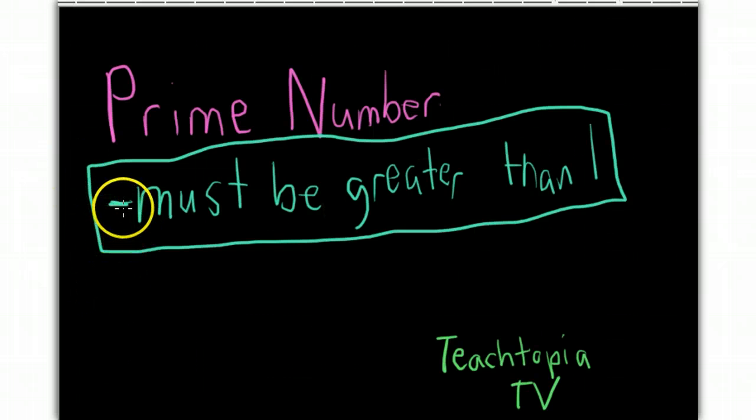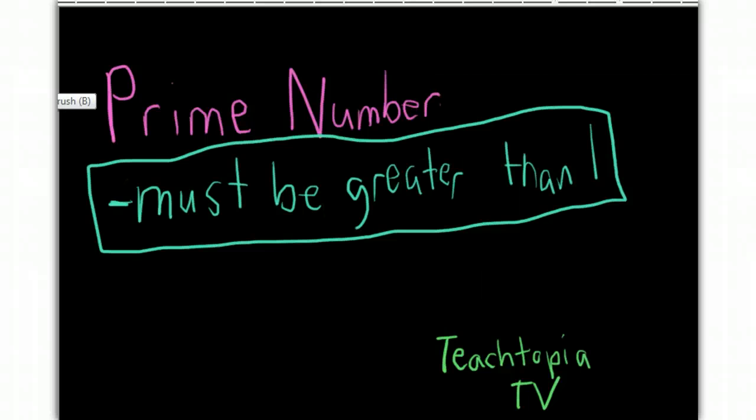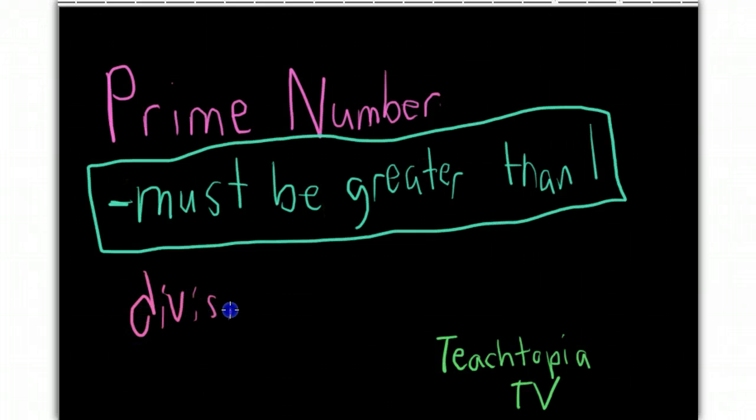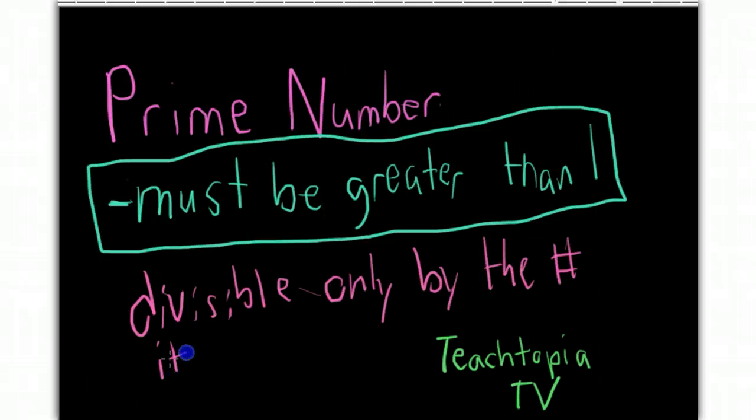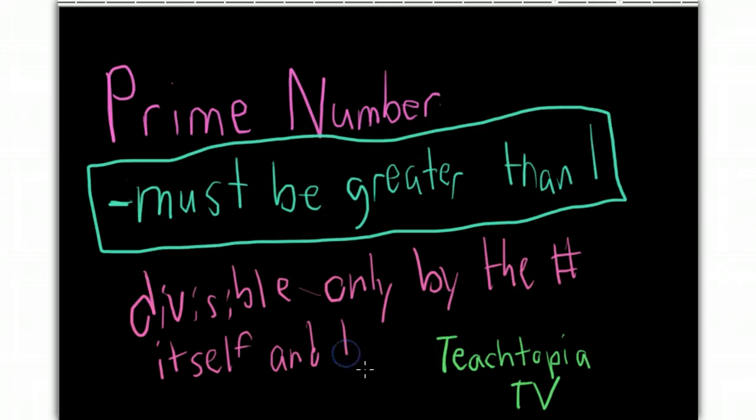Well, it must be greater than one. But what a prime number also is is that it's divisible only by the number itself and one.